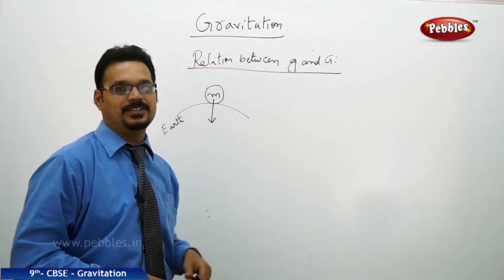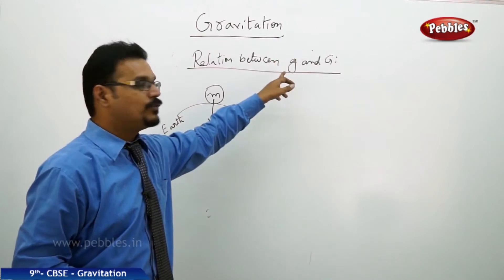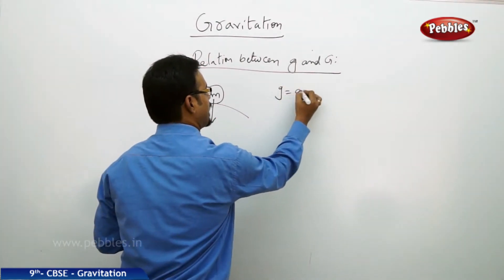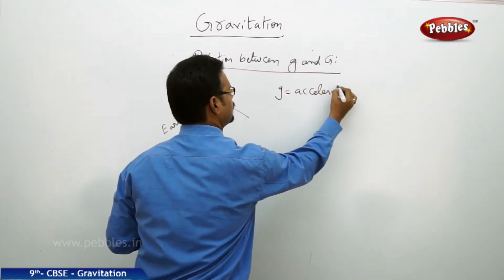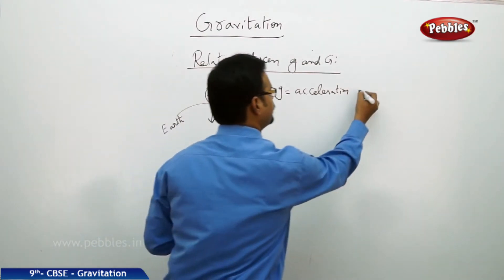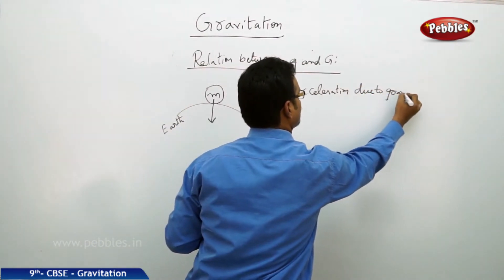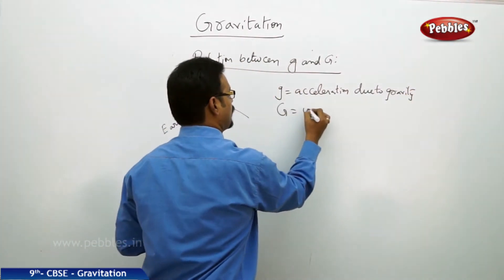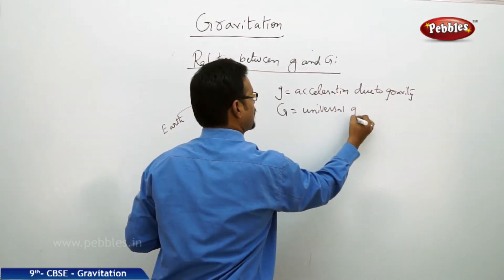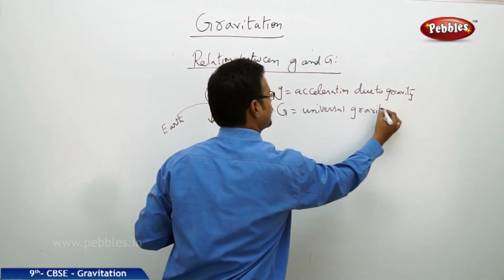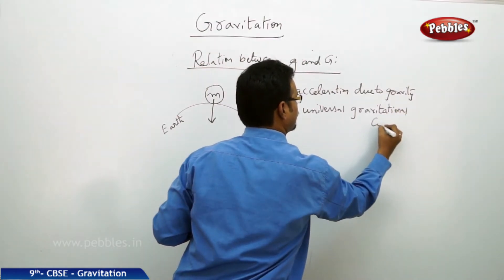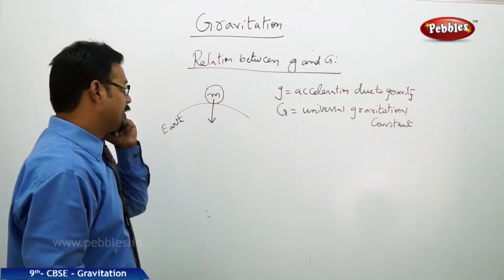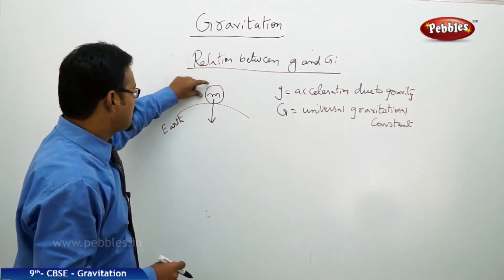Now we are going to relate two g's: small g and capital G. Small g you already know, capital G just learned. Small g is acceleration due to gravity. Capital G is universal gravitational constant.